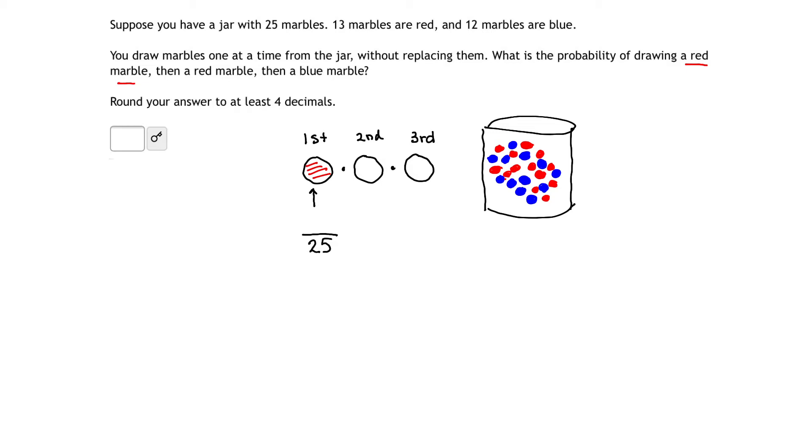And then get the number of possible events that could occur to make that marble red. Or in simple terms, how many red marbles are there? There are 13. So we would say that the probability of selecting a red marble on that first try is 13 out of 25.